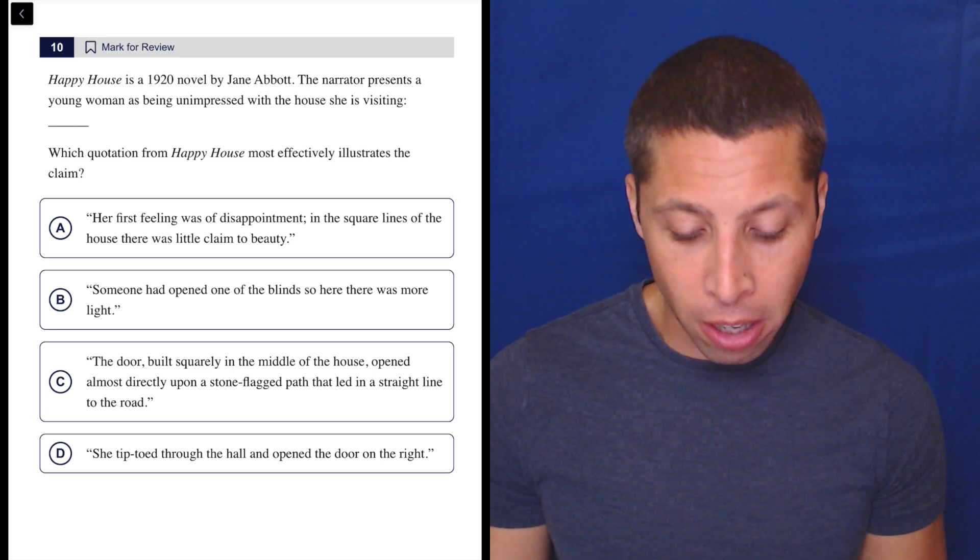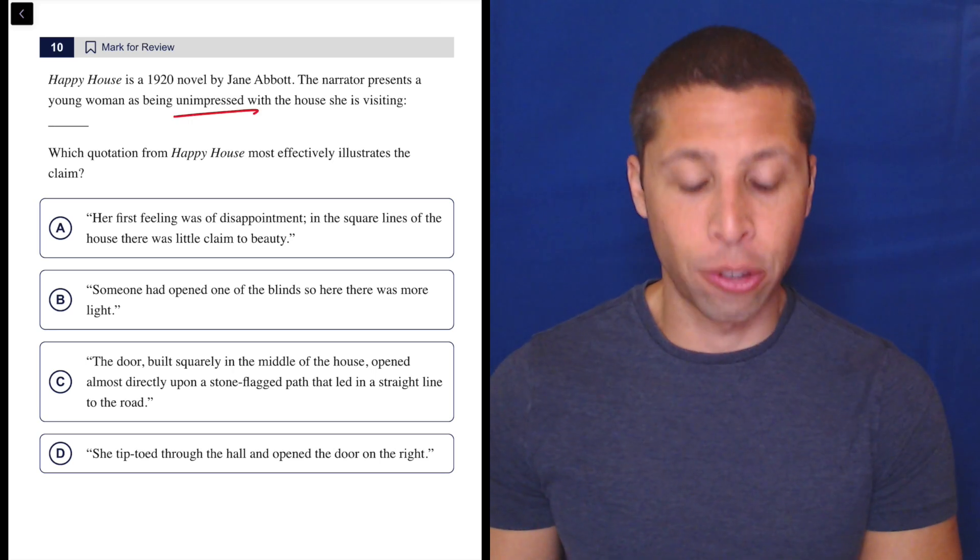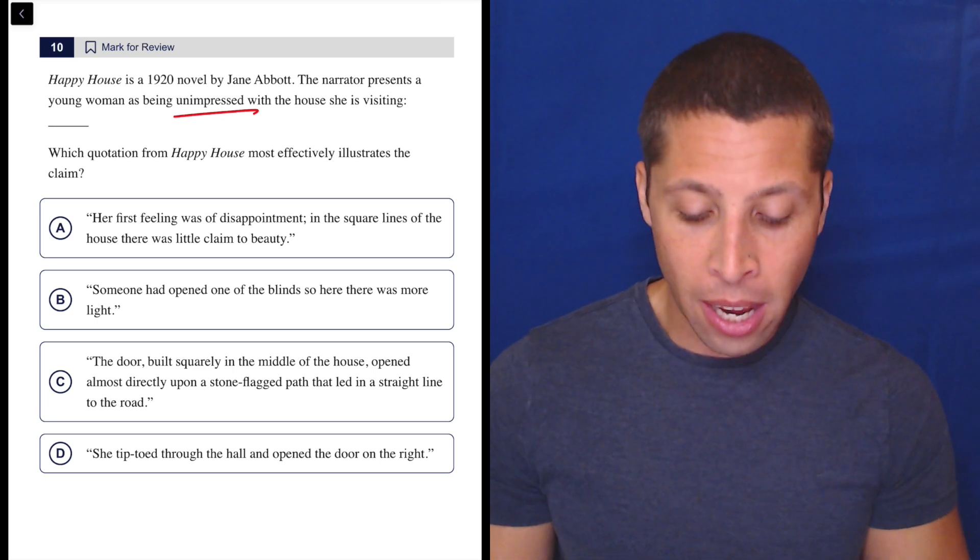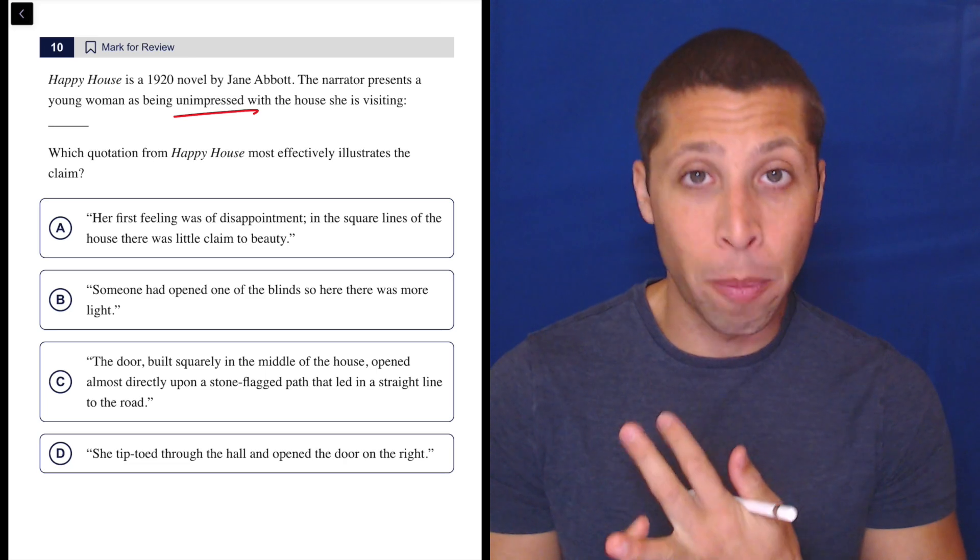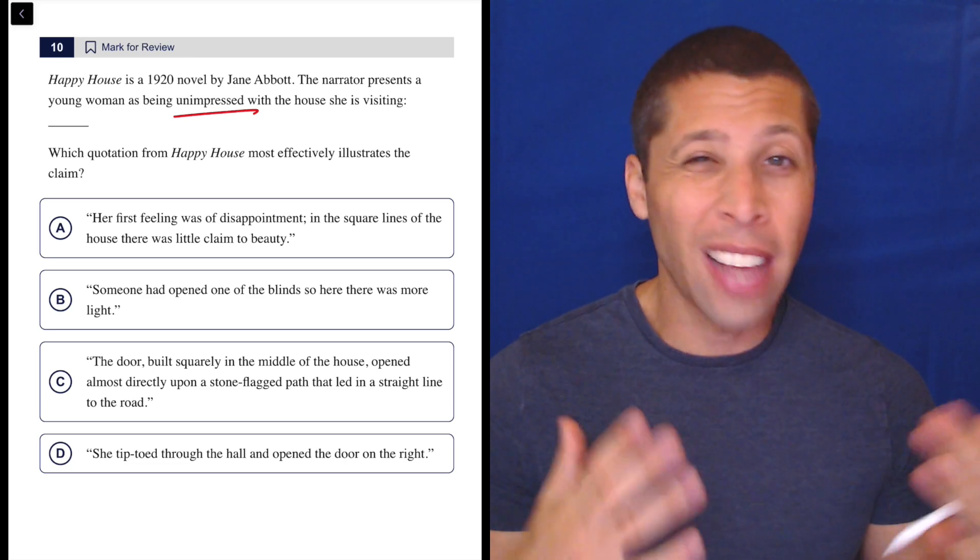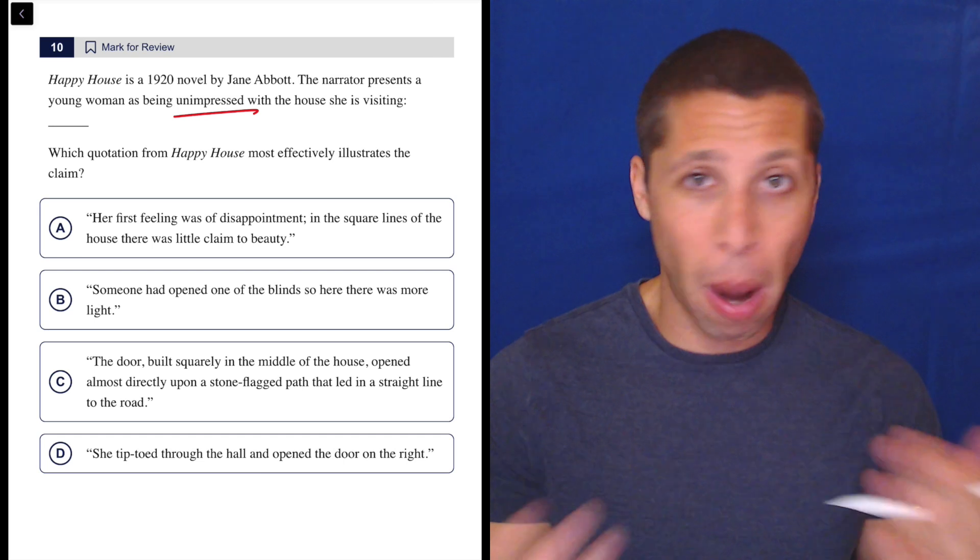So the narrator presents a young woman as being unimpressed with the house she is visiting. That one word 'unimpressed' is the only thing I am thinking about as I read these choices. I've never read this book. I don't need to know the background, the characters, or anything other than does it sound like someone is unimpressed? If so, probably the answer.